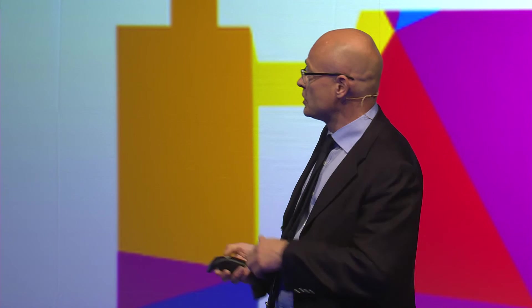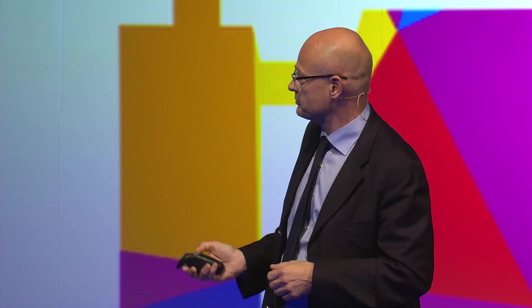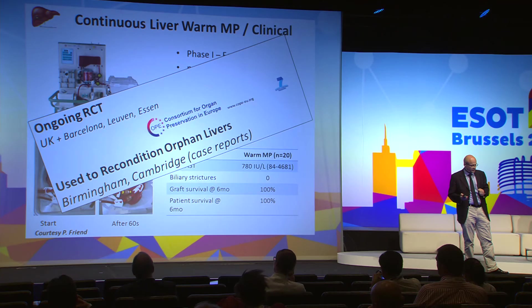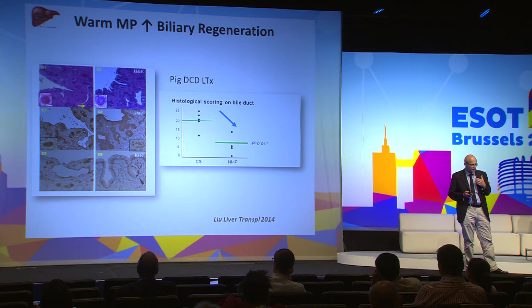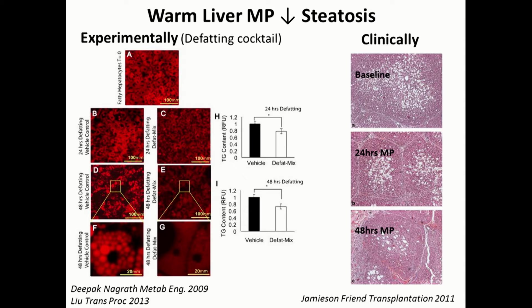This has now been translated into a phase one clinical trial showing the feasibility of the technique, and there is an ongoing trial testing the superiority of this technique versus simple cold storage. This phase one trial included 20 livers with really good results and no biliary strictures so far. We know this technique has also been used by some centers to resuscitate livers that could otherwise not be transplanted, and here too warm machine perfusion seems to positively influence biliary regeneration.